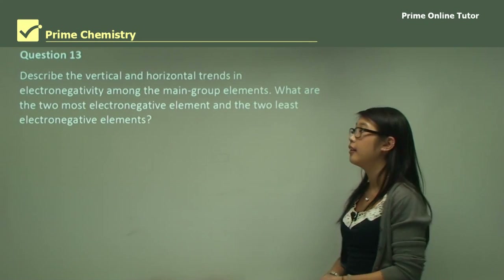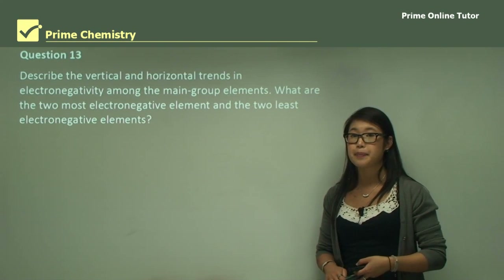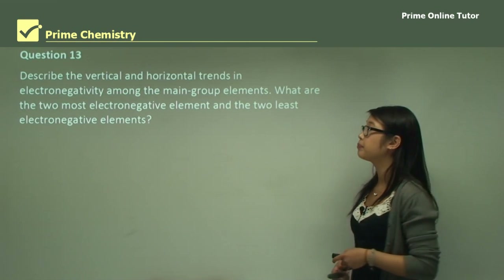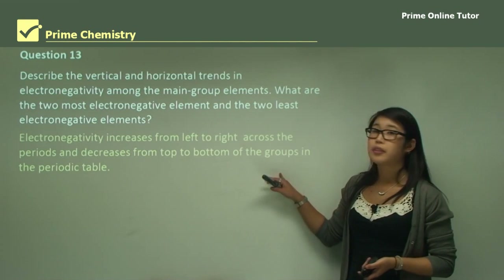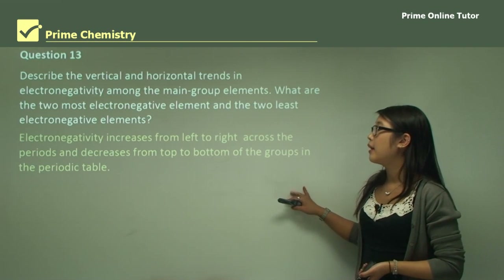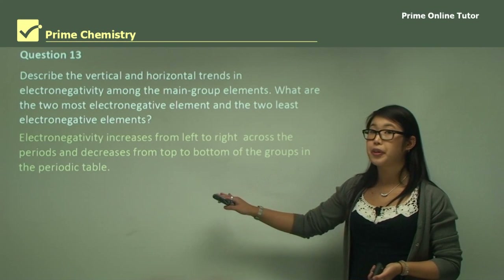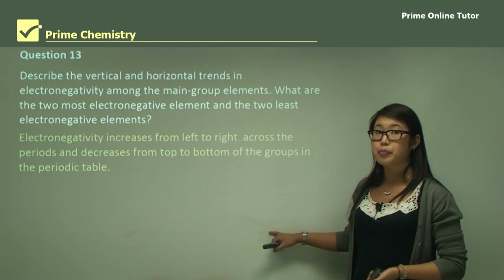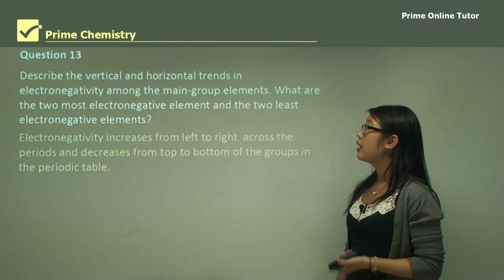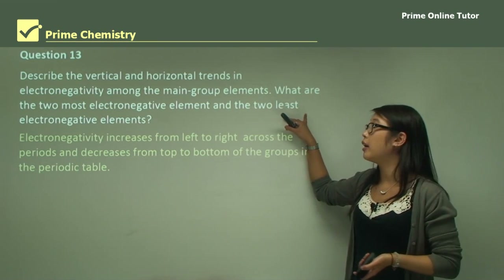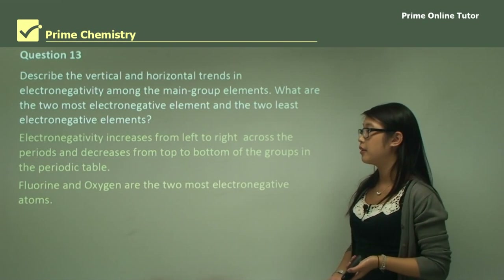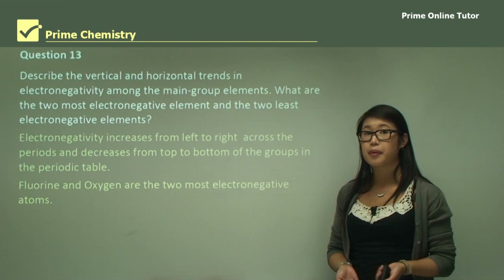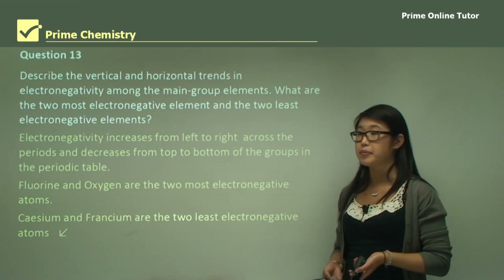Question 13: describe the vertical and horizontal trends in electronegativity among the main group elements, and identify the two most and two least electronegative elements. Electronegativity increases from left to right across the periods, and from top to bottom in the groups, the top ones are the most electronegative. Fluorine and oxygen, in the top corner of the periodic table, are the most electronegative atoms, whereas cesium and francium, in the bottom corner, are the two least electronegative atoms.